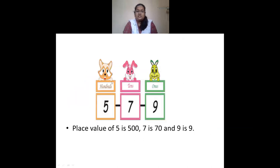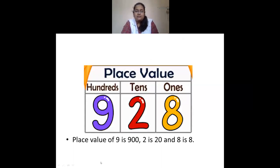Next example: 5 hundreds, 7 tens, and 9 ones. Place value of 5 is 500, 7 is 70, and 9 is 9. So the number is 579. Last example: 928. 9 is in the hundreds place with place value 900, 2 is in the tens place with value 20, and 8 is in the ones place with value 8. So this number is read as 928.